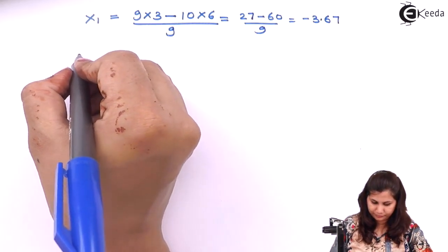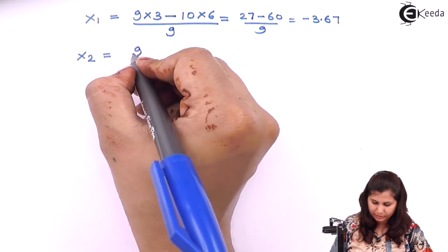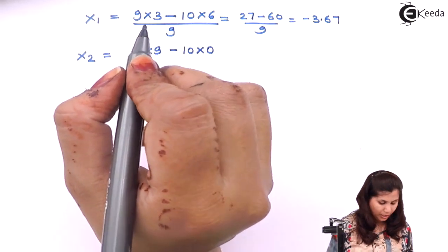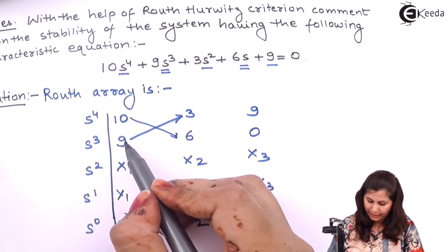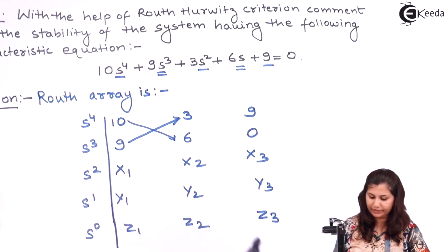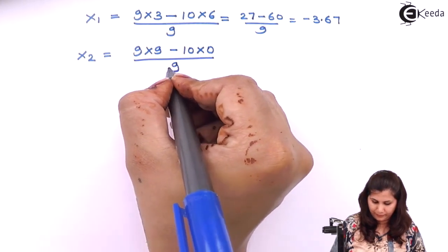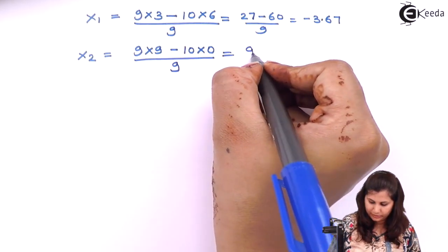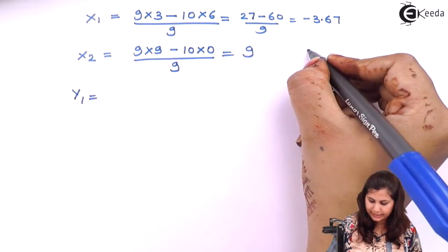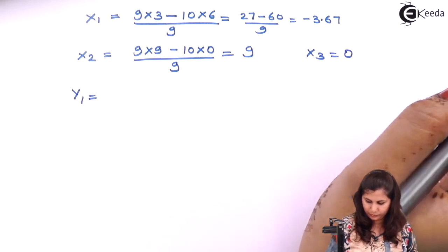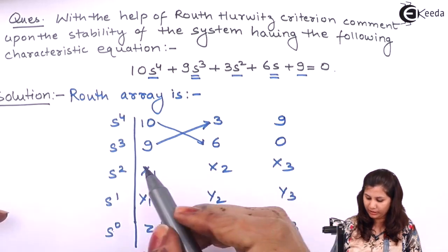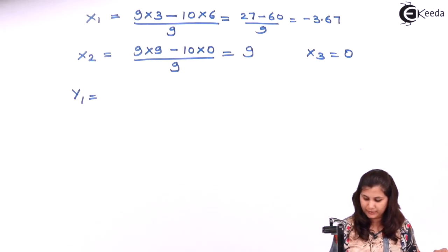Then we have x2. It will be (9×9 − 10×0) divided by 9, so x2 equals 9. And x3 will equal 0, because we don't have any further terms in that position.